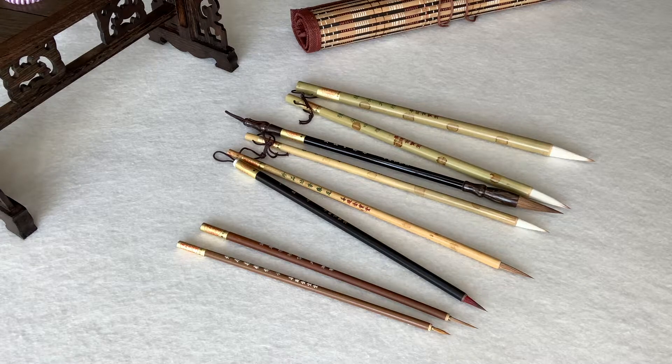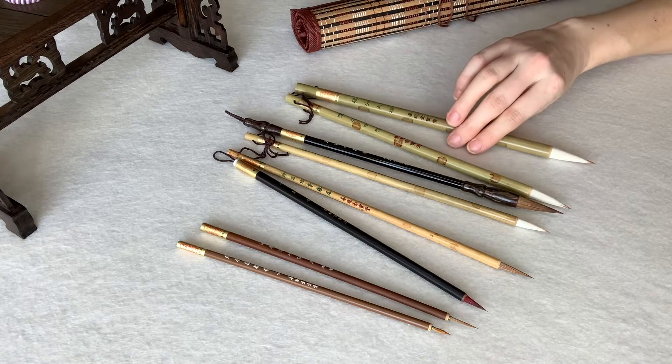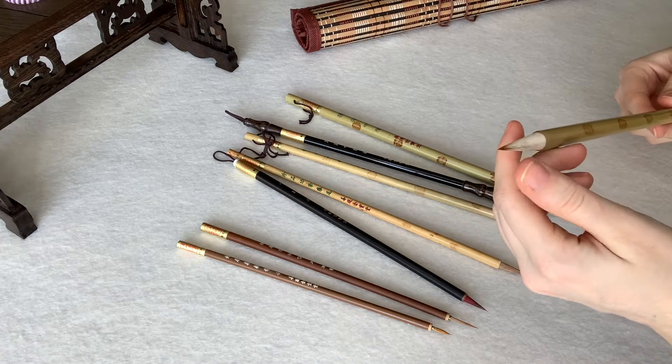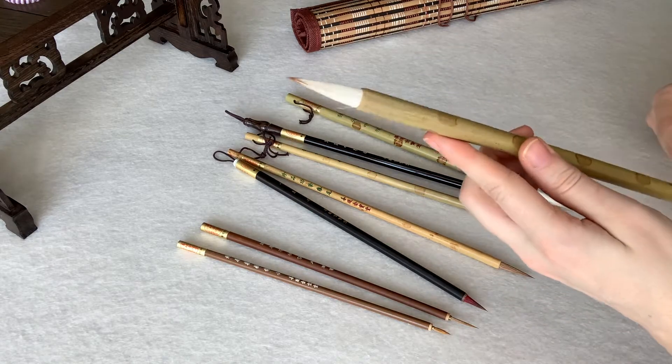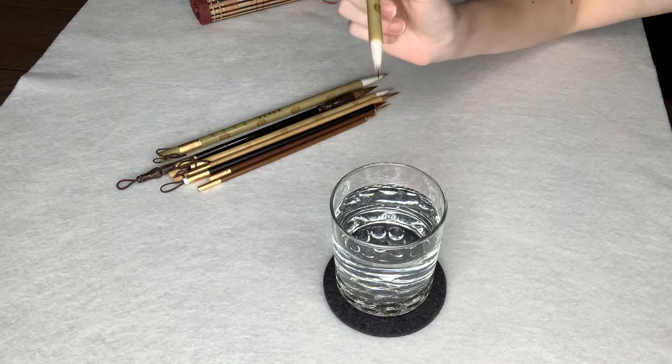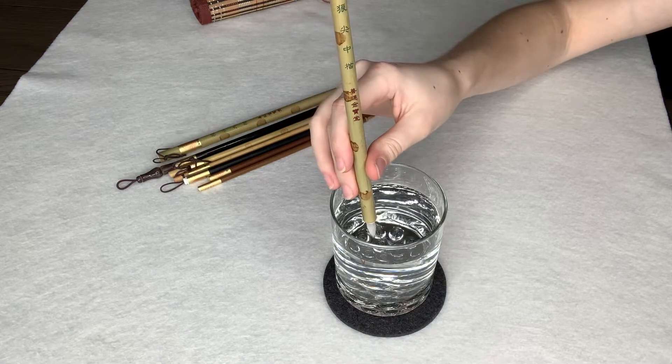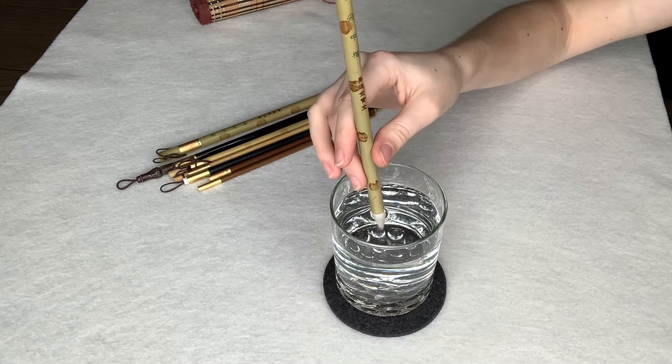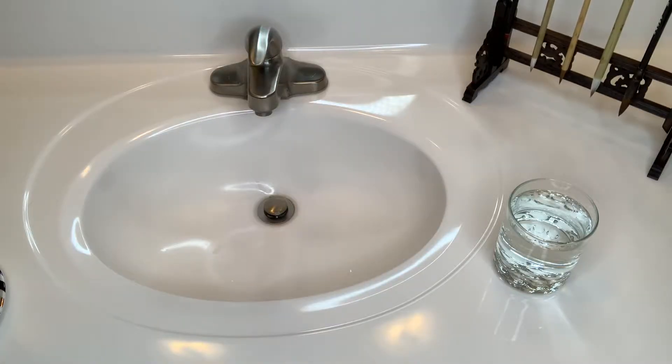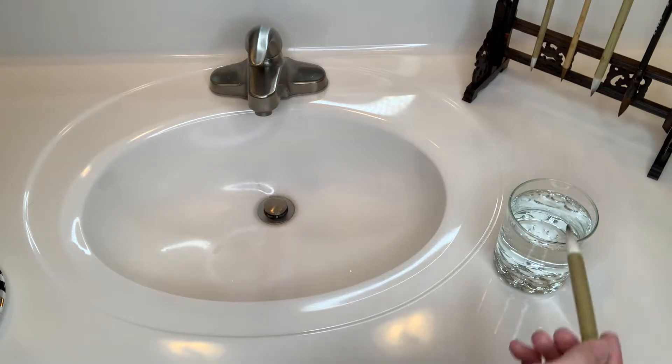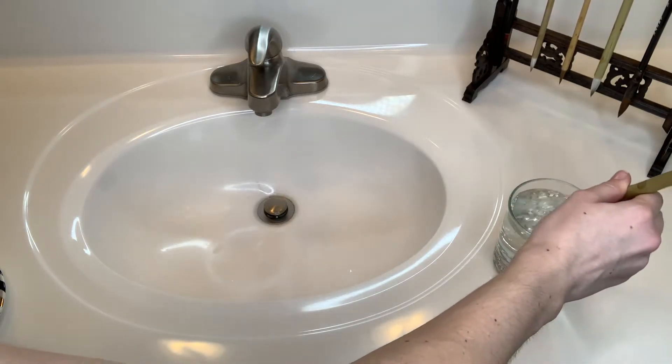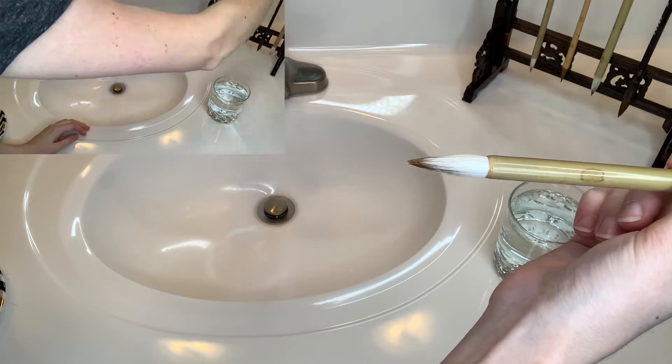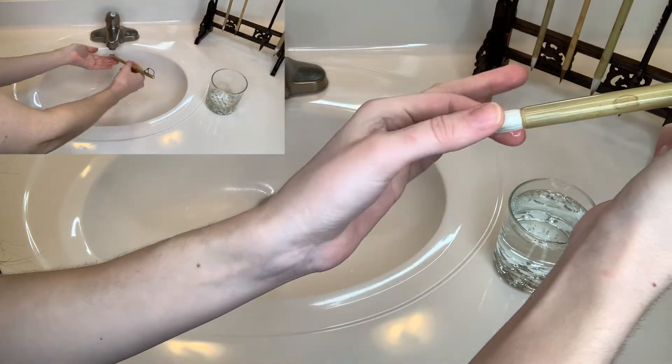Alright guys, the first thing I'll need to do is prep my brushes. As you can see here, my brushes are brand new and actually have a glue around the bristles, which helps them to keep their lovely shape during shipping. Now I'll need to soak the bristles for about five minutes to soften up that glue in some room temp water. If you soak it for much longer, it might result in some shedding in your brush.